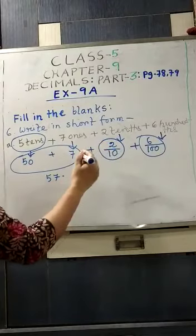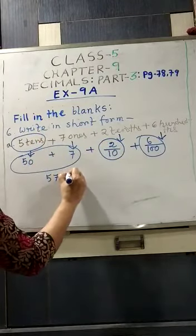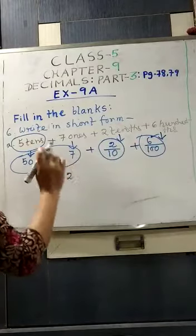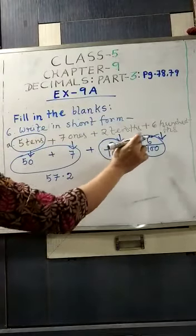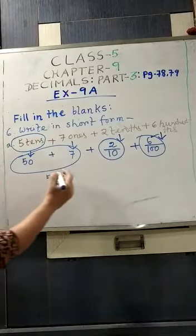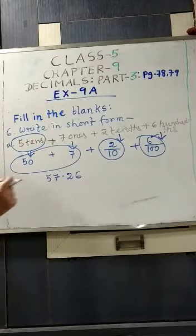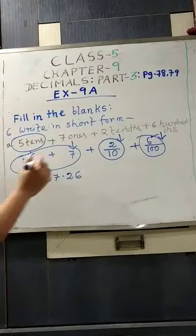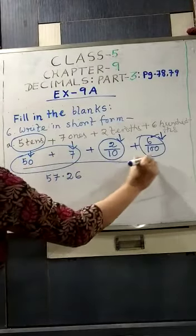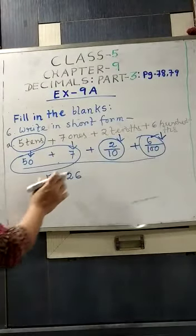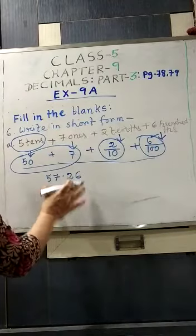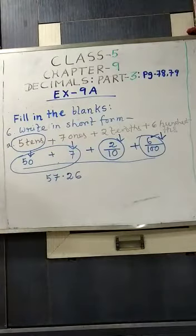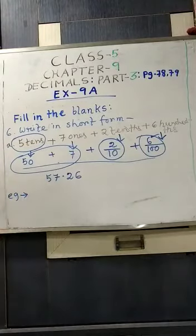Then these are the decimal fractions, so you have to put the decimal point over here. 2 tenths, that means tenth, after decimal only 1 digit, that is the first position, 2. And then 6 hundredths, that means after decimal second position, 6 will be there in second position. So 57.26. Clear? You won't have to write this one. This I have done to make you understand. If you understand the process properly, then you can easily write the answer, only 57.26.